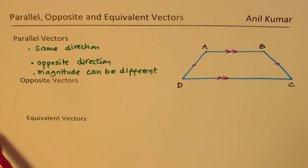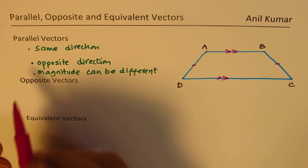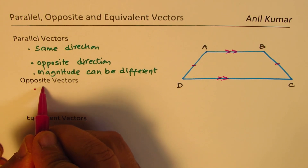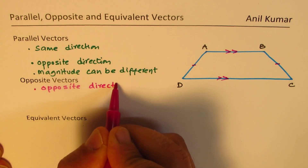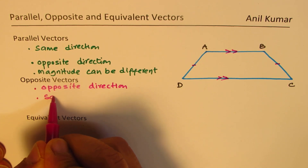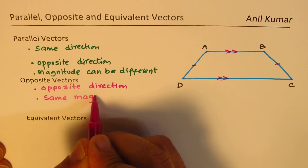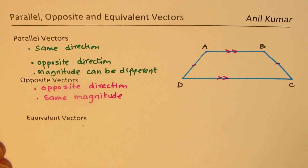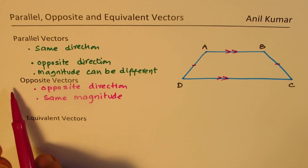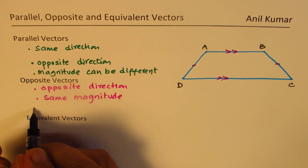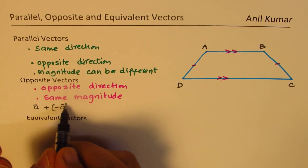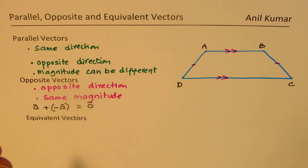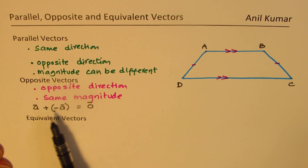Now let's talk about opposite vectors. When we say opposite vectors, we really mean they have opposite direction but same magnitude. Then they are opposite vectors. That means the sum of a vector and its opposite vector will always be a zero vector. So if I have vector a and add it with the opposite vector, written as minus a, that will always give a zero vector. That is how we define opposite vectors.